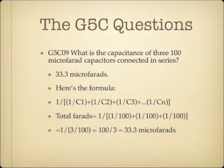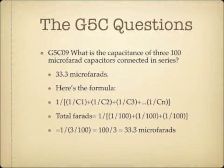What is the capacitance of three 100 microfarad capacitors connected in series? The answer is 33.3 microfarads. For capacitors in series, you use the same reciprocal formula as resistors in parallel: 1 over C-total equals 1/C1 plus 1/C2 plus 1/C3. So total capacitance equals 1 over the sum of 1/100 plus 1/100 plus 1/100, which simplifies to 1 over 3/100, equaling 100 divided by 3, which is 33.3 microfarads. All formulas will be on the website.